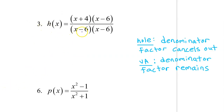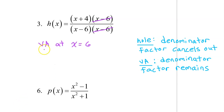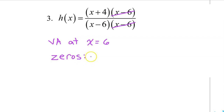In number 3, we see two factors of x minus 6 in the denominator. Even though one of the factors cancels out with the x minus 6 in the numerator, this will not give us a hole. Because one factor of x minus 6 remains in the denominator, this will give us a vertical asymptote at x equals 6. Also, h(x) will have a zero at negative 4 because x plus 4 is only in the numerator.